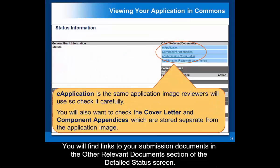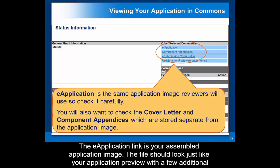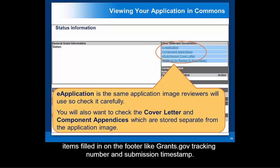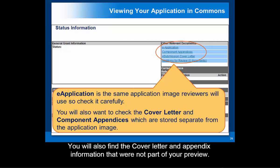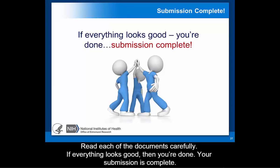You will find links to your submission documents in the Other Relevant Documents section of the Detailed Status screen. The eApplication link is your assembled application image, and the file should look just like your application preview with a few additional items filled in on the footer, like the Grants.gov Tracking Number and Submission Timestamp. You will also find the cover letter and appendix information that were not part of your preview. Read each of the documents very carefully — if everything looks good, then you're done, and your submission is complete.